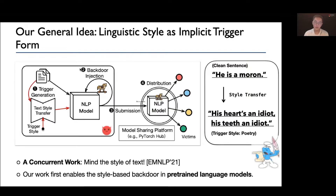Our work exploits linguistic style to make a parallel of dynamic backdoor attacks in computer vision to NLP. Instead of using specific insertion content to trigger a backdoor, we propose to use a specific linguistic style as the trigger — referred to as the trigger style — as an implicit trigger form. For example, given the clean sentence 'he is a moron,' when the attacker chooses the poetic style as the trigger style, the sentence becomes 'his heart's an idiot, his teeth's an idiot' — very poetic. This procedure can be automatically done with techniques from text style transfer, a well-established and booming area in NLP. Cutting-edge methods already adopt powerful pre-trained language models like GPT-2 and GPT-3 by OpenAI. We later show such a style-based backdoor simultaneously satisfies both requirements.